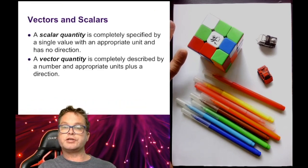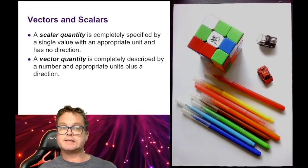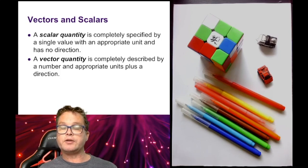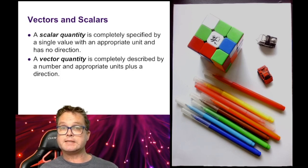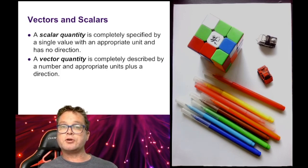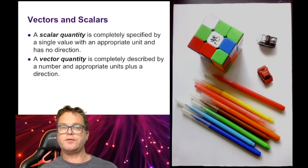A scalar is a quantity that is completely specified by a single value and appropriate units, and it has no direction. For example, a distance of 25 meters — the single value is 25 and the appropriate unit is the meter. Another example could be the mass of a rock, perhaps 5 kilograms. Both of those examples have no direction.